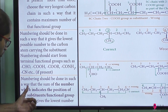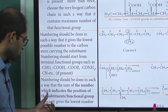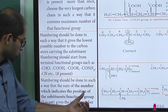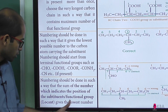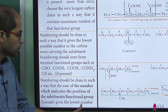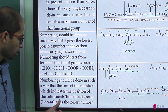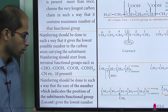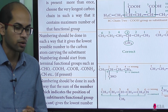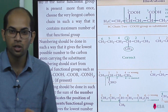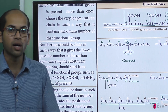Numbering should be done in such a way that the sum of the numbers indicating the position of the substituents or functional groups gives the lowest possible number. Give all functional groups the lowest number first — that is the first preference.